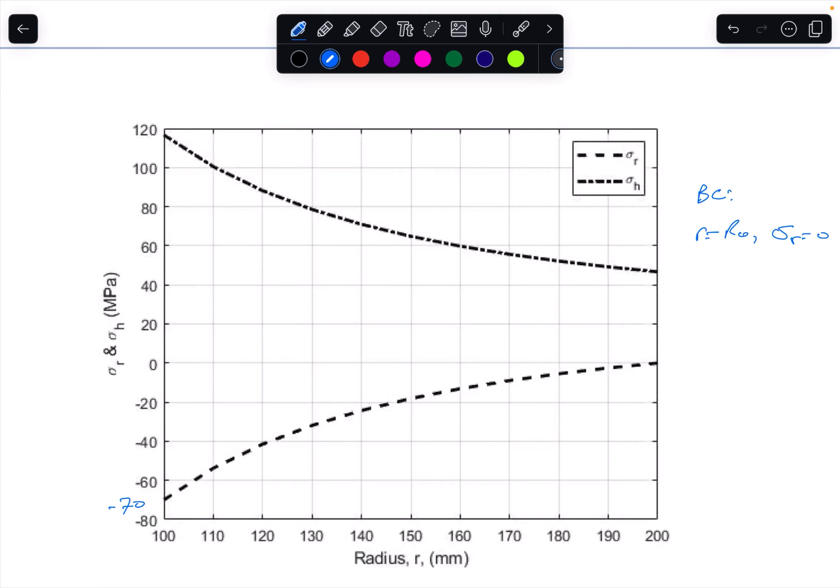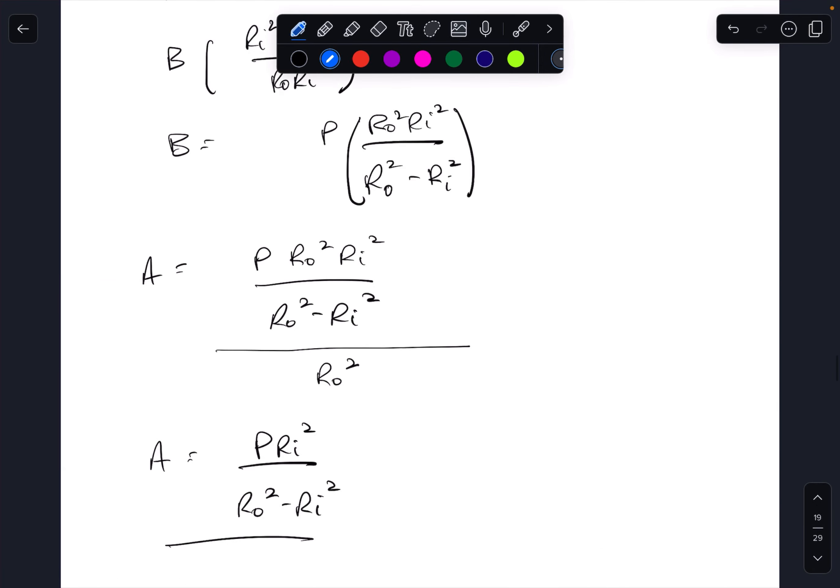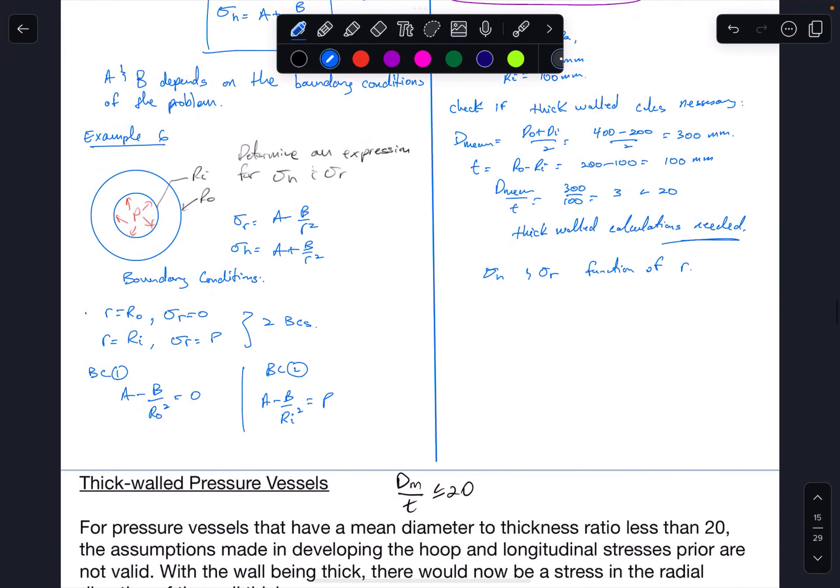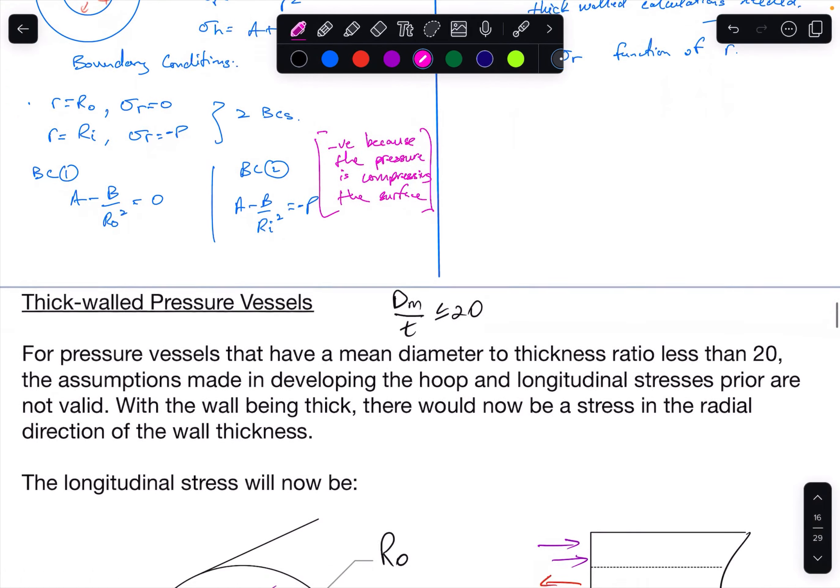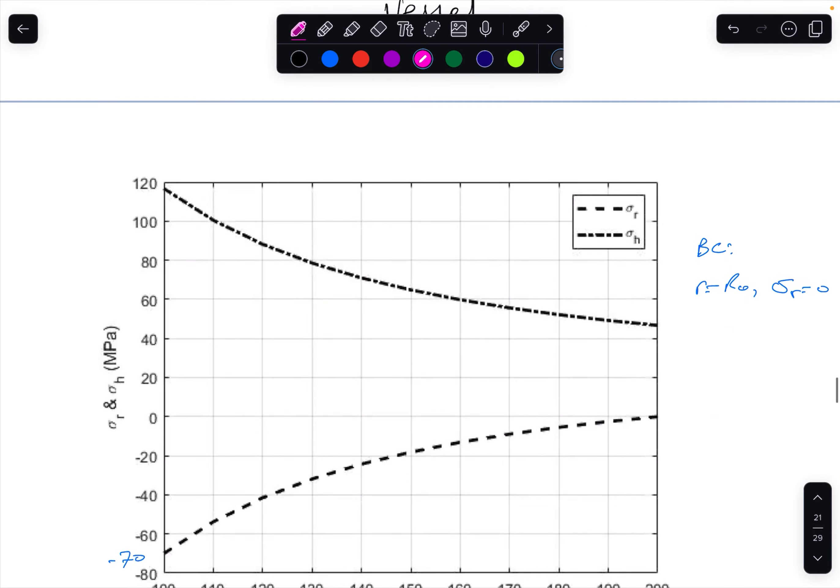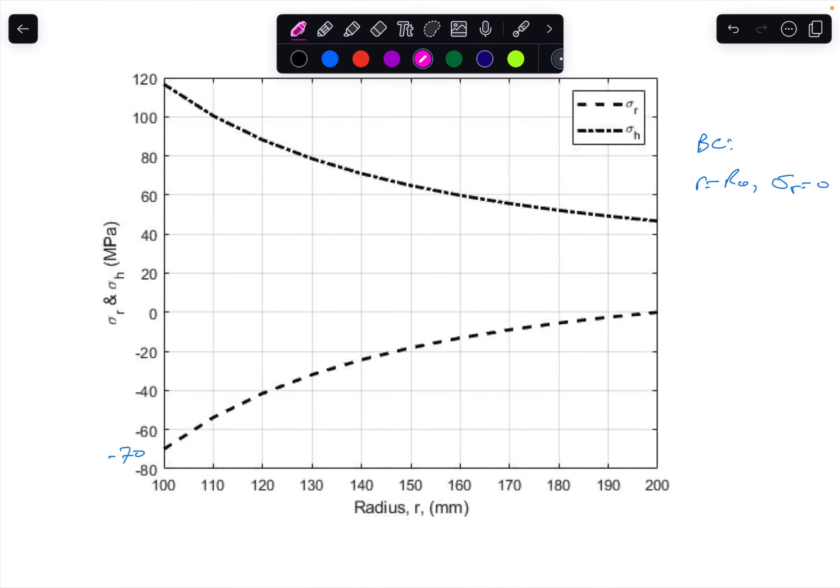It's minus 70, so we need to go back up here and change this to minus. I think that was a slight error there, because it's compression. So this plot here was done in MATLAB, and the code for that is given on Canvas.